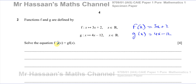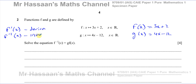So we need to solve the equation where the inverse of f of x, written with a superscript power of minus 1, equals g of f of x. Now, this means the inverse of the function f — not to be confused with the derivative. The derivative uses a dash notation, while the inverse has a power of minus 1. Many students confuse the two, so be careful about that. We need to solve the equation formed when we equate the inverse of the function f with the composite function g of f of x.